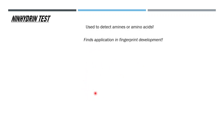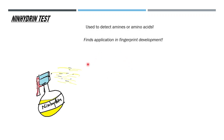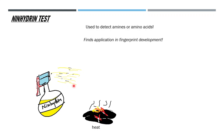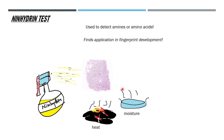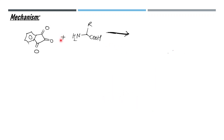Suppose you leave a fingerprint by touching a surface. You apply ninhydrin solution where the fingerprint is suspected to be, then warm the area — the reaction is slow so heating accelerates it, and moisture also helps. After some time the fingerprint becomes visible as a purple color. That's how the ninhydrin test works for fingerprint development.